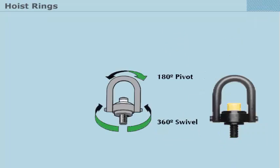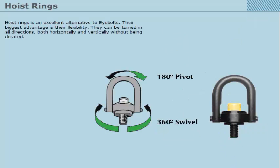Hoist rings are an excellent alternative to eye bolts. Their biggest advantage is their flexibility. They can be turned in all directions, both horizontally and vertically without being derated.